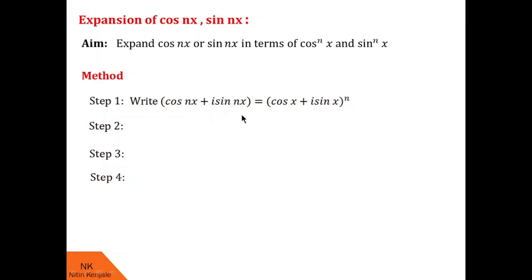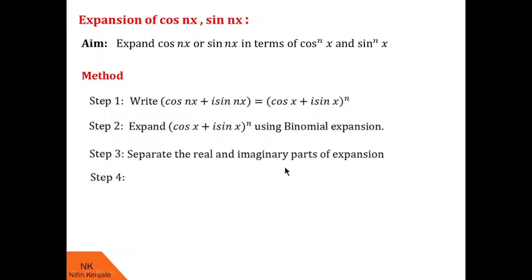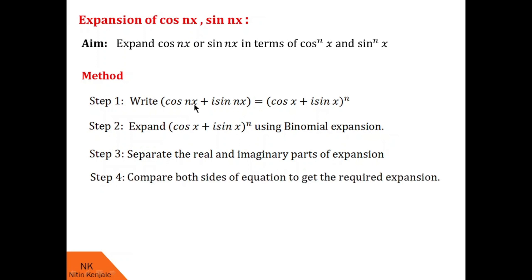Now in step 2, we will use binomial expansion to expand the RHS, treating it as (a + b)^n. Then in step 3, we will separate the real and imaginary parts. And lastly in step 4, we will compare the LHS and RHS to find the expansion of the corresponding cos nx or sin nx.